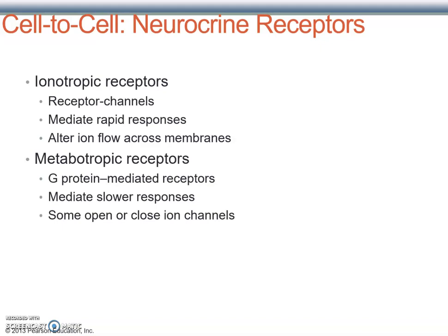Now let's think more about the typical scenario of the chemical synapse. Once a neurotransmitter is released, it travels across the synaptic cleft and binds to a receptor. There are two different types of receptors: ionotropic and metabotropic. Ionotropic receptors — the term comes from 'ion' — are ion channels. Once the chemical binds, the flux of ions is altered, changing the membrane potential of the postsynaptic cell and transmitting the signal.